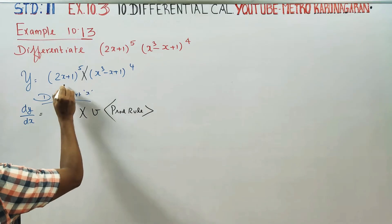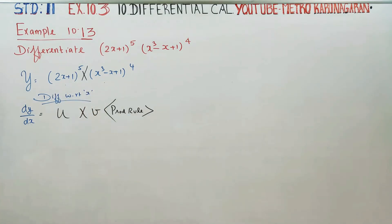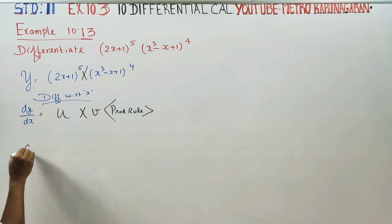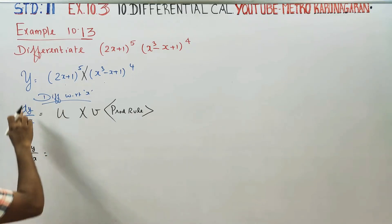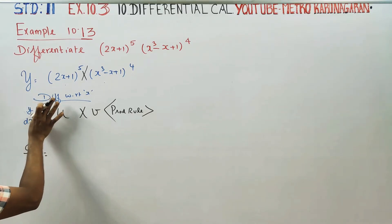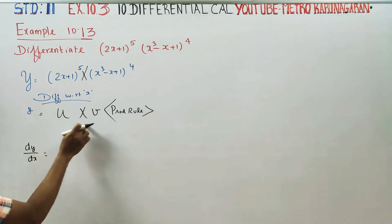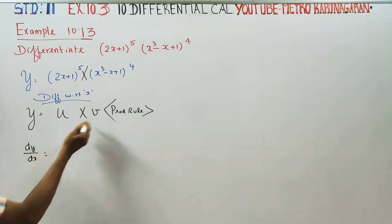Because multiplication is present here, I will set this part as u and that part as v. What is the product rule? The product rule says: if y is equal to u into v, then dy by dx follows a specific formula. The question is y is equal to u into v.